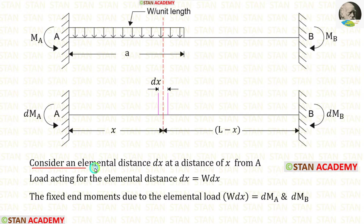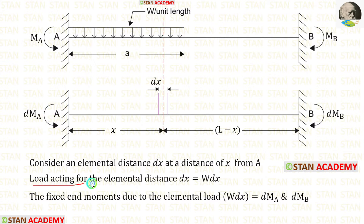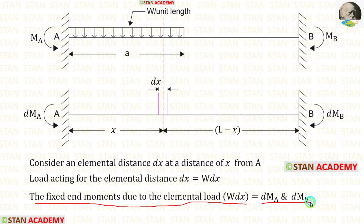Let us consider an elemental distance dx at a distance of x from A. The load acting for the elemental distance dx is equal to W·dx. The fixed end moments due to the elemental load W·dx will be DMA and DMB.